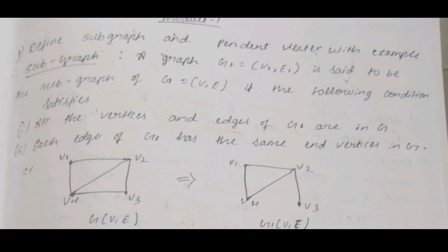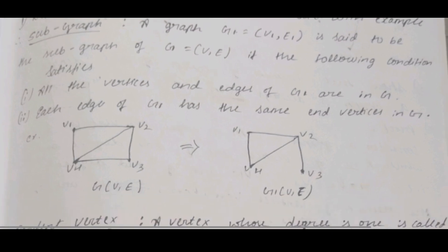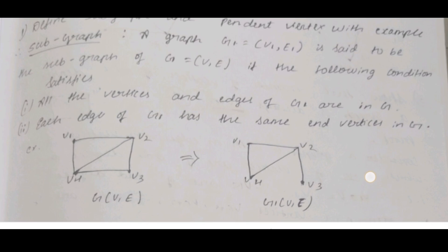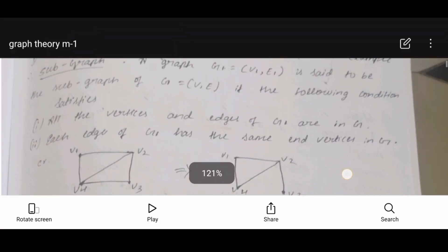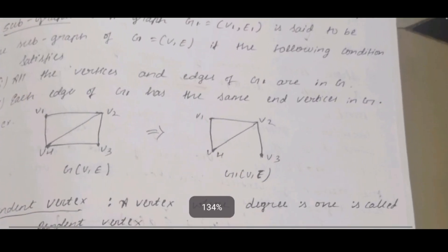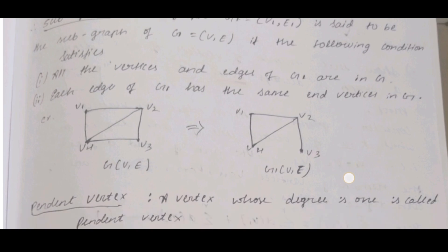said to be a subgraph of G = (V, E) if the following conditions are satisfied. All the vertices and edges of G1 are in G. All the vertices of G1 should be in G. Each edge of G1 has the same end vertices in G — meaning if V1 and V2 have an edge in G1, there should also be a V1 to V2 edge in G. Then we say G1 = (V1, E1) is a subgraph of G = (V, E).